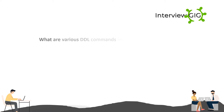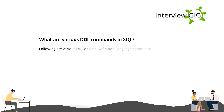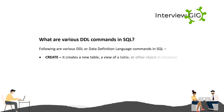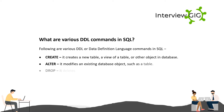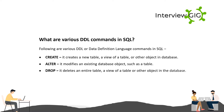What are the various DDL commands in SQL? Following are the DDL commands: CREATE — creates a new table, a view of a table, or other objects in the database. ALTER — modifies an existing database object such as a table. DROP — deletes an entire table, a view of a table, or other objects in the database.